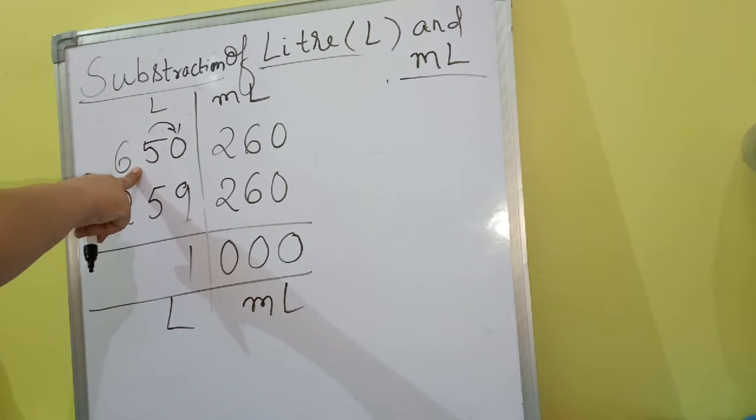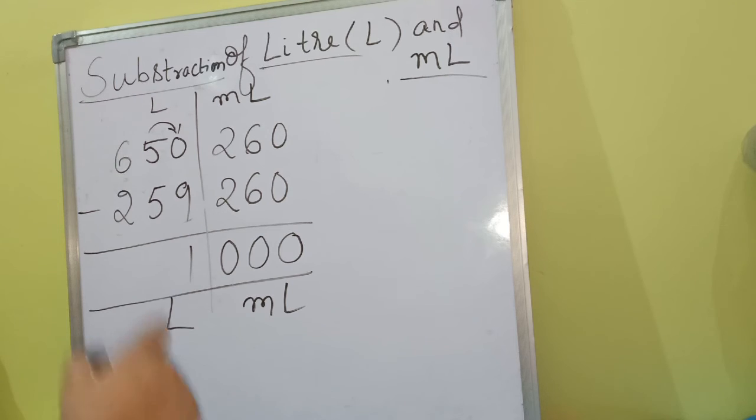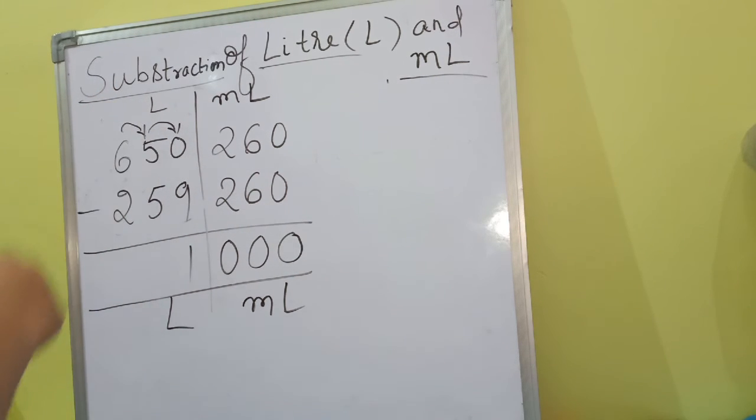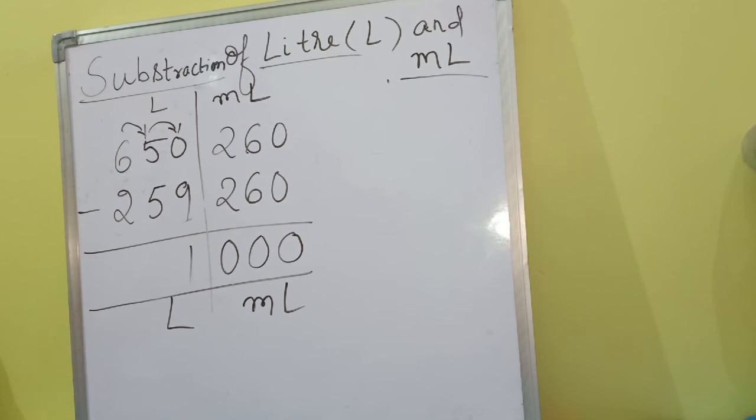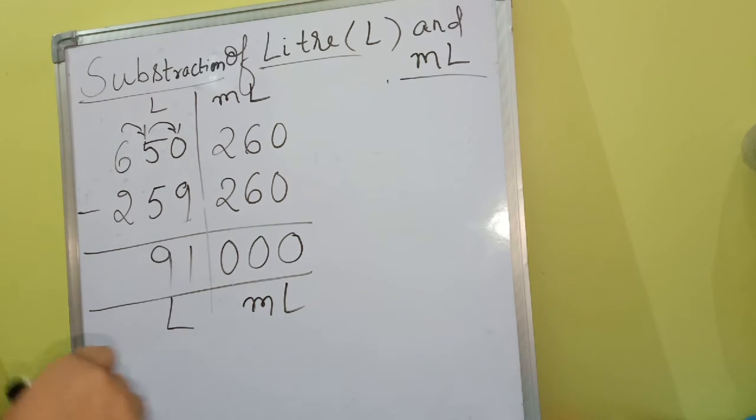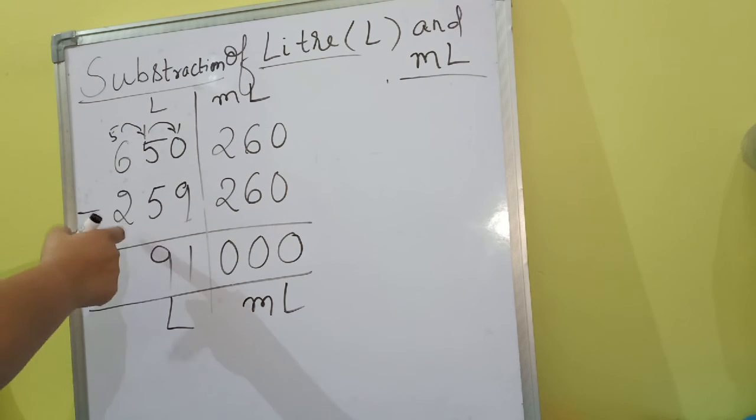Here it become 1, le liya to yaha 4 ho gaya. 4 is smaller than 5, so phir hume yaha se borrow karenge and it becomes 14. So 14 minus 5 is 9. Yaha se 1 borrow kar liya tha, it becomes 5. So 5 minus 2 that is 3.